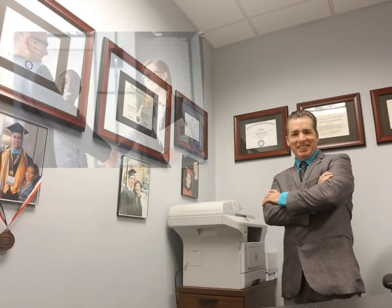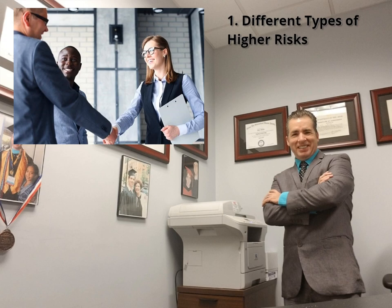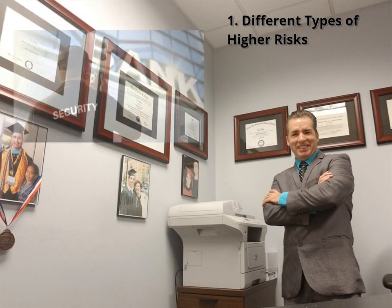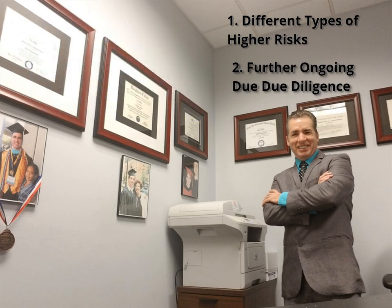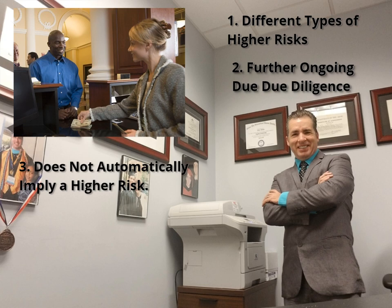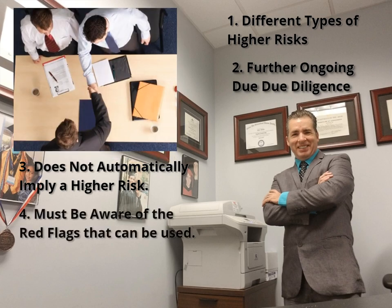The determination that a customer is a PEP is not an aim in itself, but forms part of the process that enables financial institutions and DNFBPs to assess the different types of higher risks related to PEPs. Determining that a customer is a PEP does not absolve financial institutions and DNFBPs of further ongoing due diligence specifically tailored to the fact that the customer is a PEP. Being a PEP does not prejudge a link to criminal activities or equate to being a criminal and or subsequent abuse of the financial system. Similarly, the fact that a person is a domestic or international organization PEP does not automatically imply that he or she poses a higher risk. Financial institutions and DNFBPs need nevertheless to be aware of the risks that a PEP may abuse the financial system to launder illicit proceeds, and need to be aware of the red flags, or indicators, that can be used to detect such abuse.